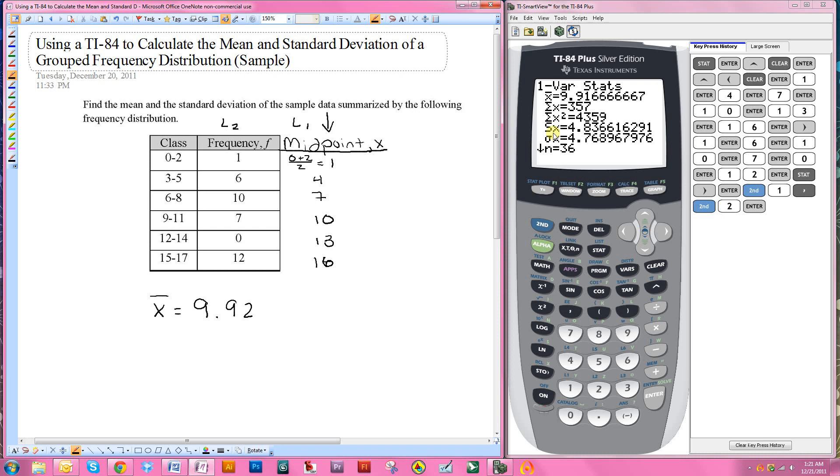Now here are two separate values for standard deviation. Now this is going to depend on whether you are doing a sample or a population. In this case, we're working with a sample, so we need to use the one with the S here. Now if it said population, we would use sigma, but in this case we're using sample, so it's S. So it's 4.84.